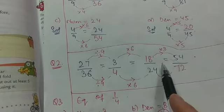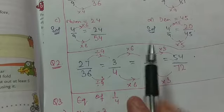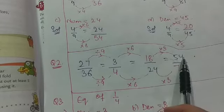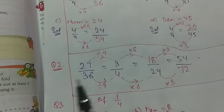Now here it is 18 upon 24 equals to 54 upon dash. So 18 into 3 is 54. That means 24 into 3 will be 72.